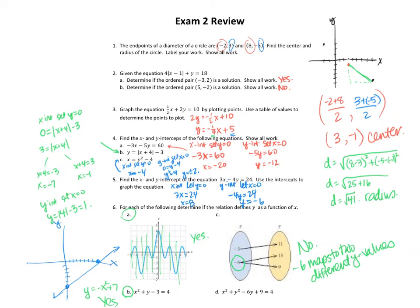And for the last one I have y squared minus 6y equals negative x squared plus 13. This one is not going to define a function because for a given x value it can have two different y values because of that y squared. So this one is not a function because it has a y squared in there.